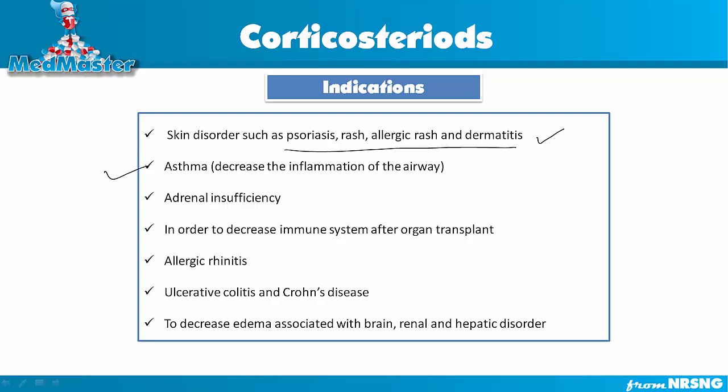If a patient has adrenal insufficiency — meaning their adrenal gland is not producing enough glucocorticoids and mineralocorticoids — these drugs can be given as a supplement. Corticosteroids are also used after organ transplant to decrease the immune system. Whenever a kidney, liver, or heart transplant occurs, there's a high chance the organ can be rejected by the patient's immune system. This medication is given after the transplant to suppress the immune system so the patient does not have organ rejection. It is also given in allergic rhinitis because it decreases inflammation and the immune response.